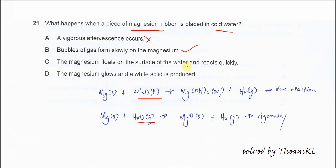The magnesium floats on the surface and reacts quickly - no, it's a slow reaction. D says the magnesium glows and white solid is produced - this is not going to happen. Answer confirmed is B.